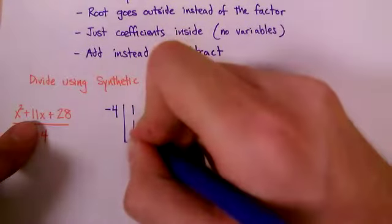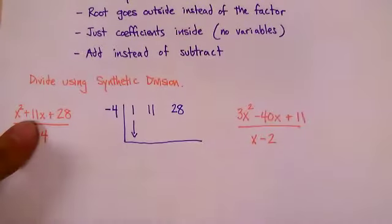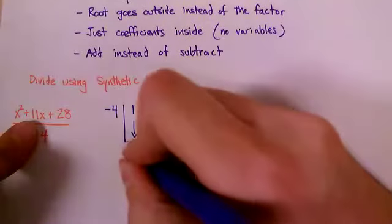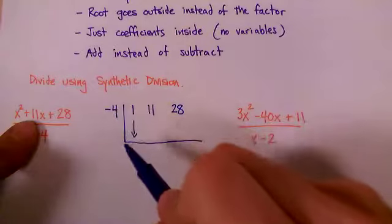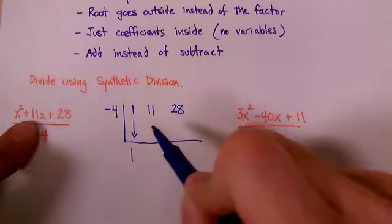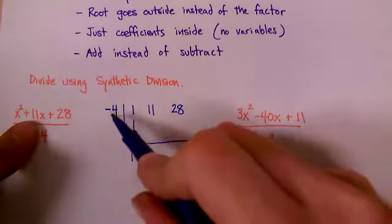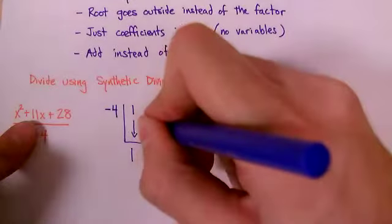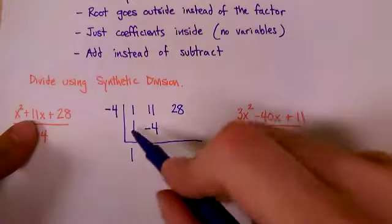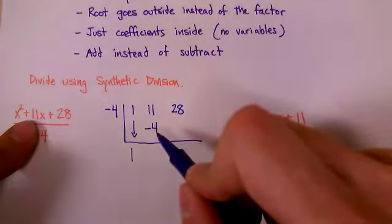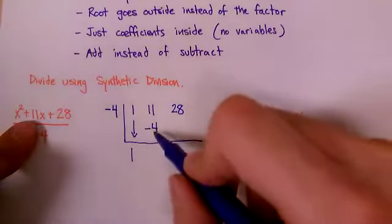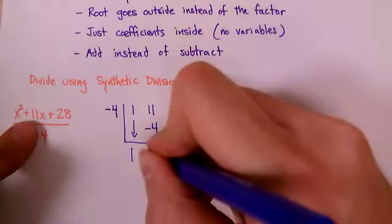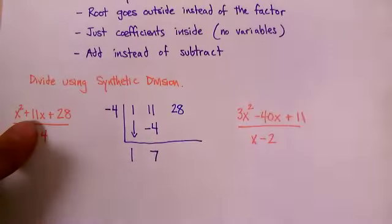When you start the synthetic division process, you always drag down your first number. You drag it down and your answer goes on the bottom here. So the one just carries down. Then you do this number times this number and put that right here. So you do negative four times one is negative four. That goes into the next slot. This times this equals this. And then you add those two numbers together. 11 plus negative four. Again, we're adding, not subtracting.